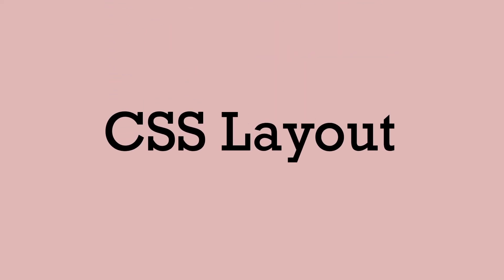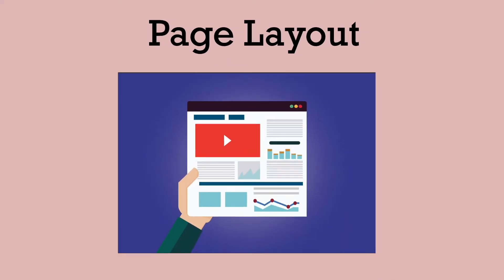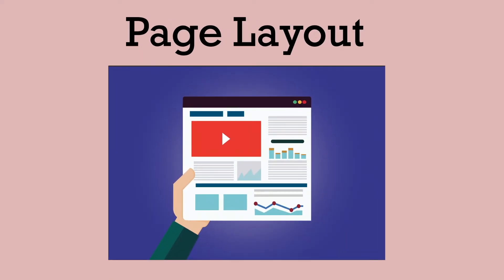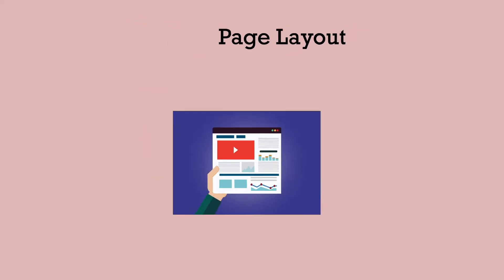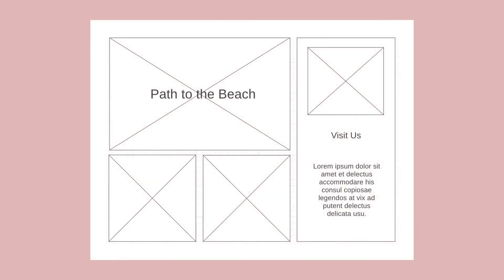CSS layout. There are different ways to lay out your web page using CSS. Page layout is the process of placing and arranging the text and image content on the page to produce a visually pleasing page. We need to place all the elements in the proper place on the page so it will look like our wireframe.